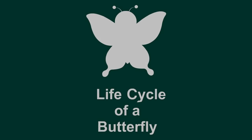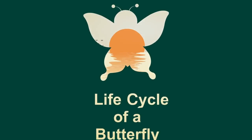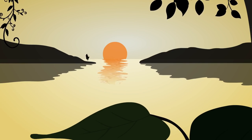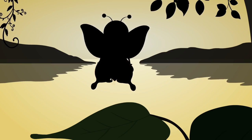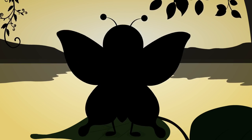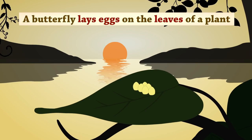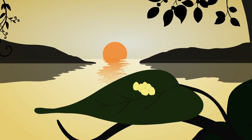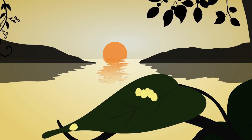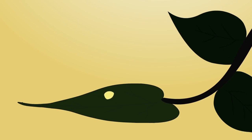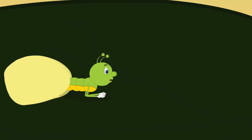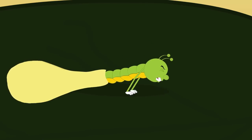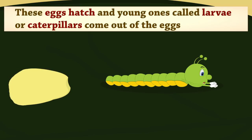Our topic for today is Life Cycle of a Butterfly. A butterfly lays eggs on the leaves of a plant. These eggs hatch and young ones called larvae, or caterpillars, come out of the eggs.